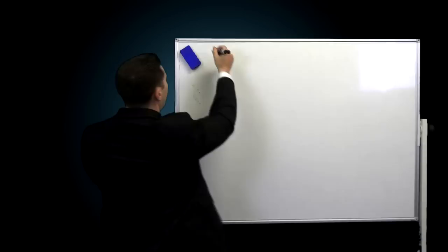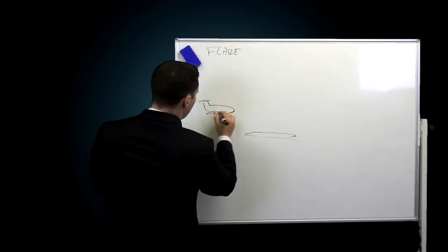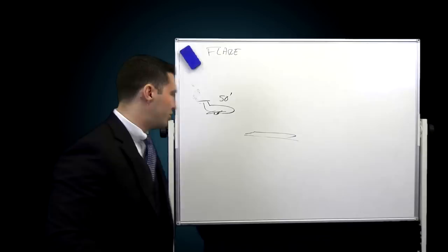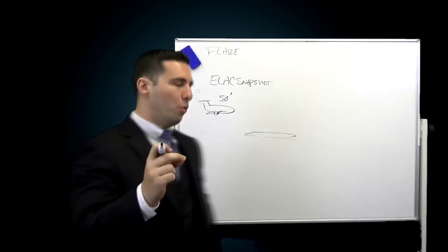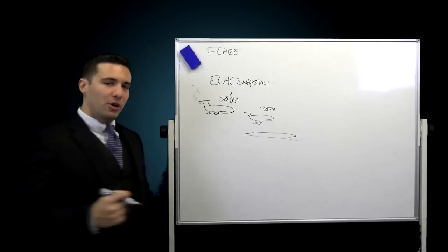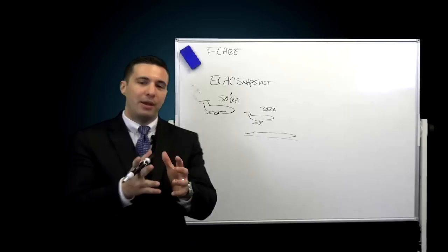In normal law, there are three modes: ground, flight, and flare. I discuss each one in depth in the flight control laws video. But for now, let me just talk to you about the flare mode. Flare mode is basically available only in normal law. What it is, is that at 50 feet, the ELACs will take a snapshot of your pitch attitude. So if your pitch is five degrees, six degrees, it takes a little picture of it right there.